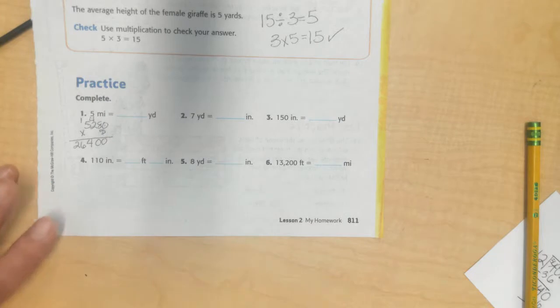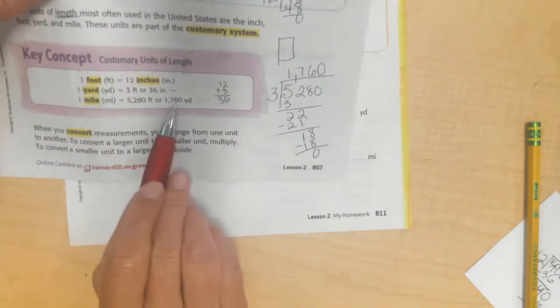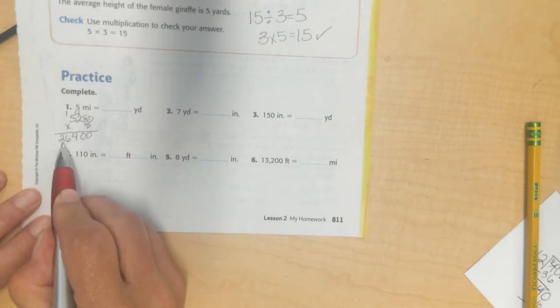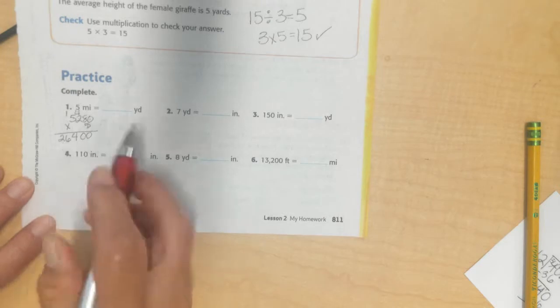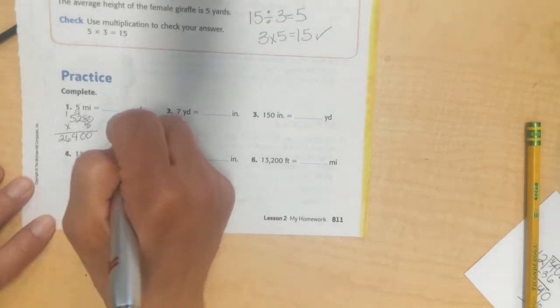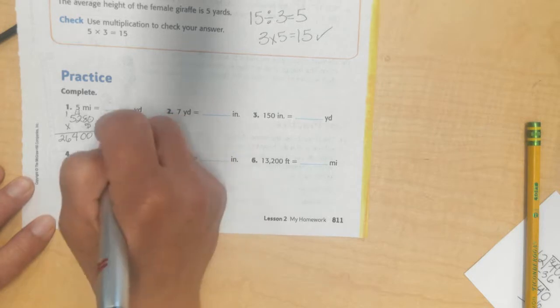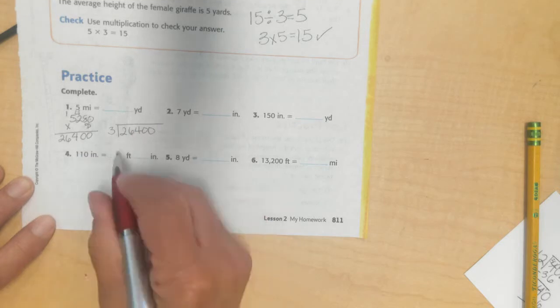Carrying my 1. 5 times 5 is 25 plus 1 is 26. So, I have 26,400 feet in 5 miles. I probably could have divided by yards directly, but we'll do it this way.